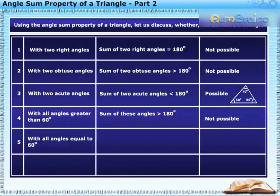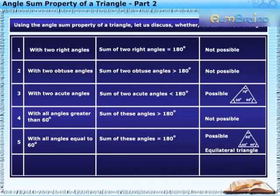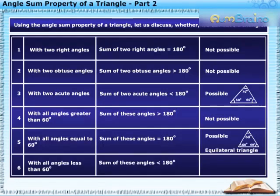With all three angles equal to 60 degrees, the sum of these angles is equal to 180 degrees. Therefore, we can have such a triangle, and this triangle is called an equilateral triangle. With all three angles less than 60 degrees, their sum will also be less than 180 degrees, hence it is not possible to have such a triangle.